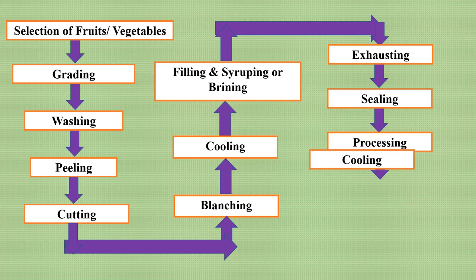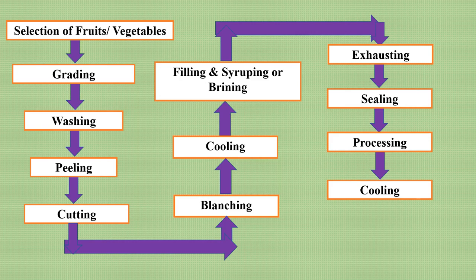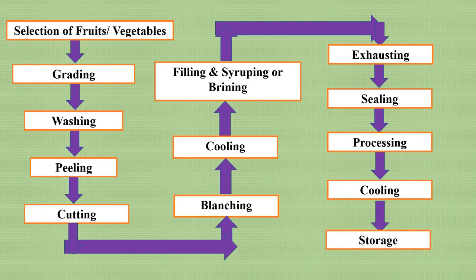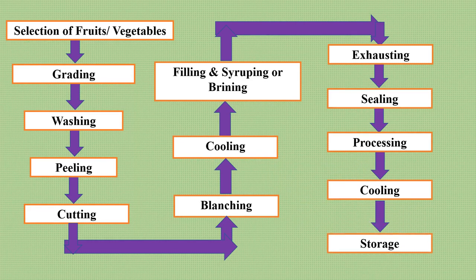After sealing, the sealed containers are dipped into hot water for a predetermined time at a higher temperature — this is known as processing. After processing, the containers are then cooled. Cooling is done either by directly dipping the canned containers into cold water, or by spraying cold water, or by blowing cold air. Then the containers are stored. This completes the process of canning.